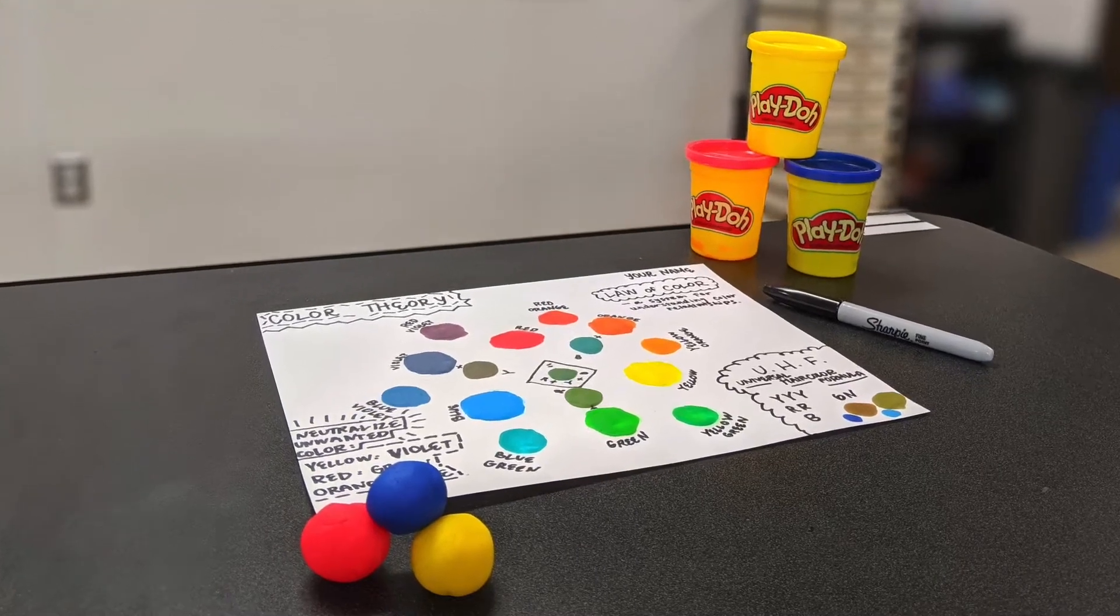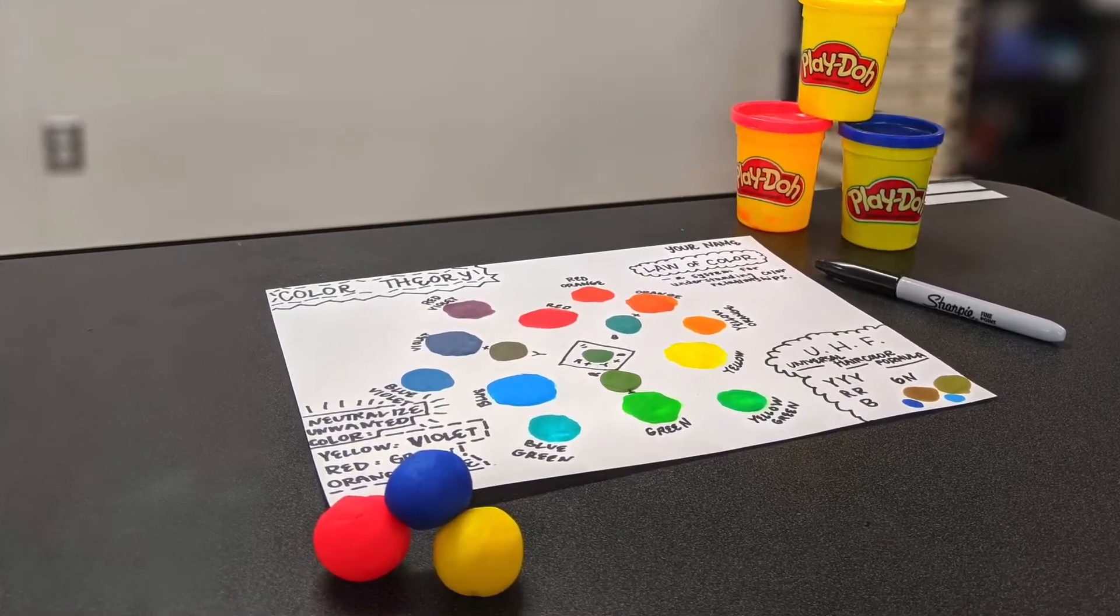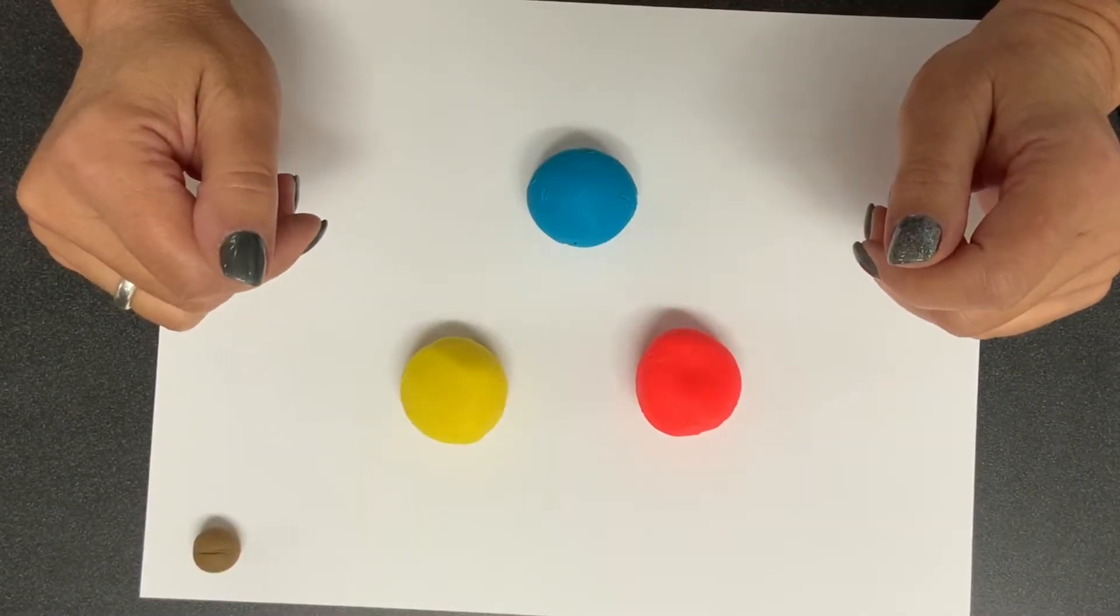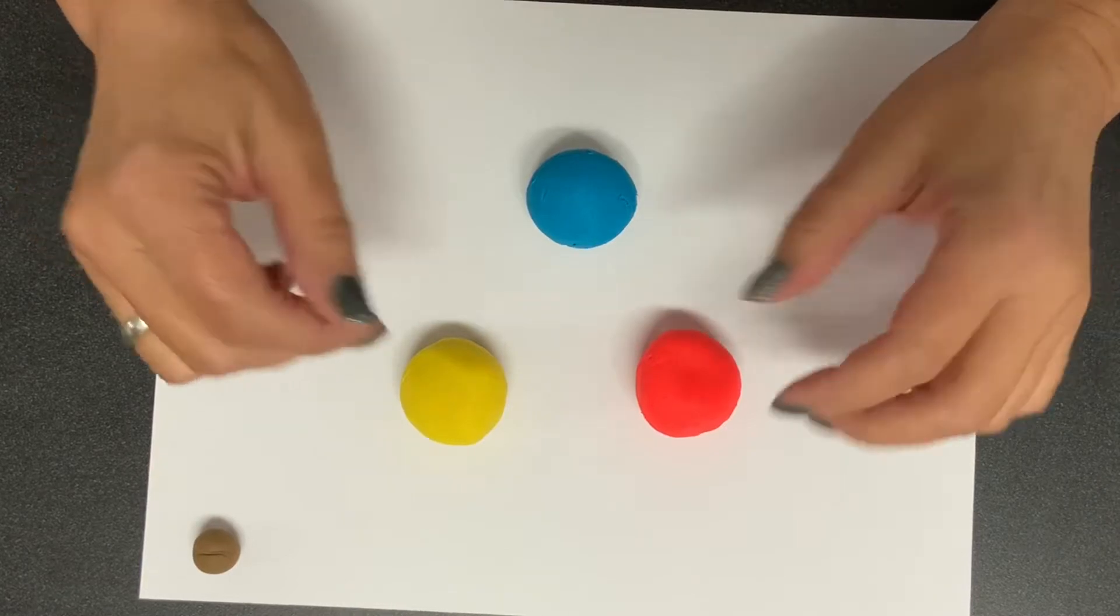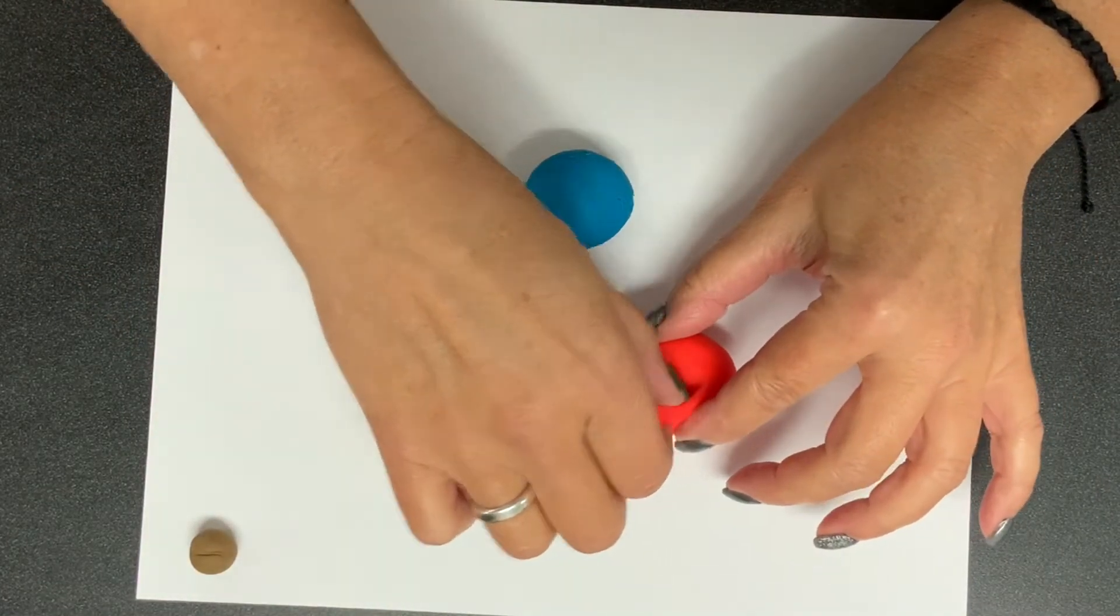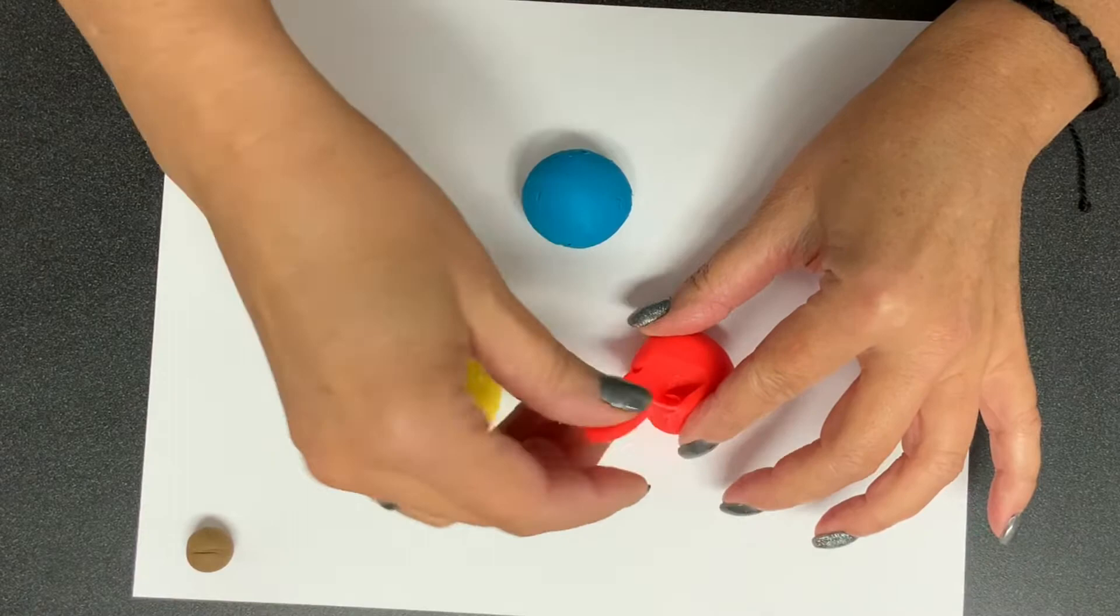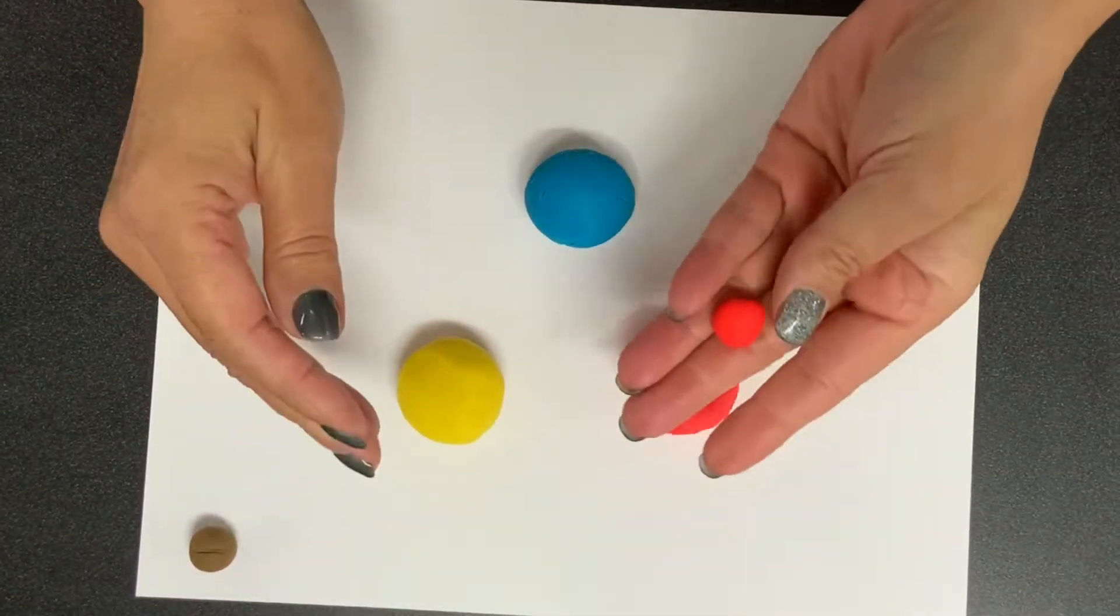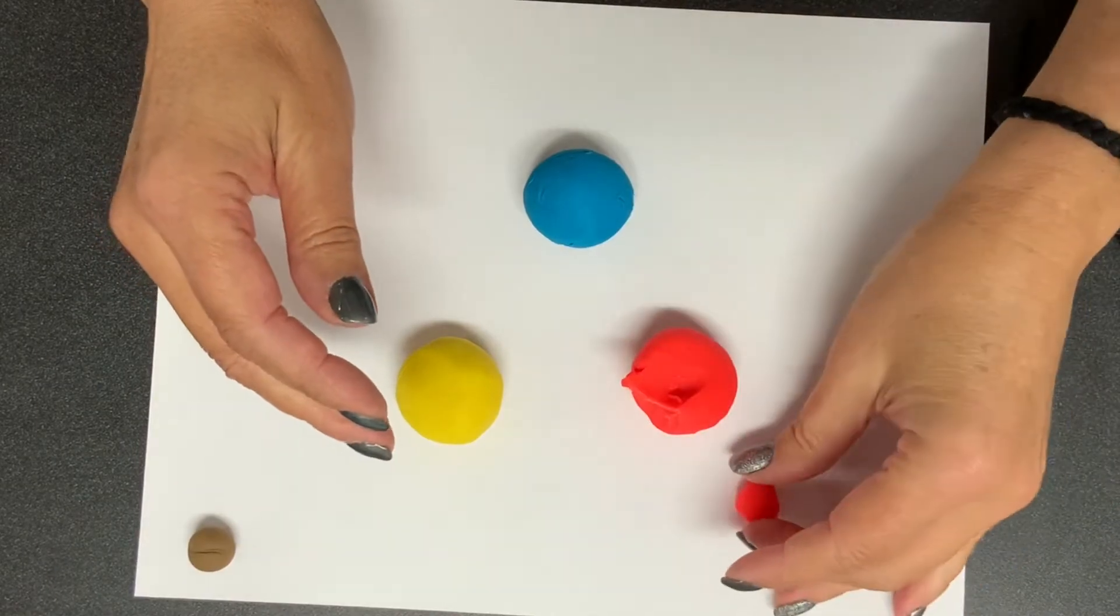We are going to do a little color theory activity using Play-Doh. Get your cardstock paper and set your three colors out. We are going to first start by getting equal size amounts of each color, about like a gobstopper size.